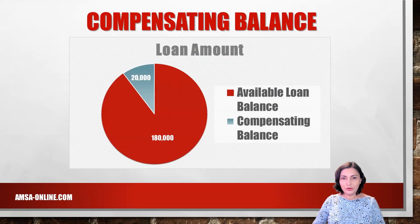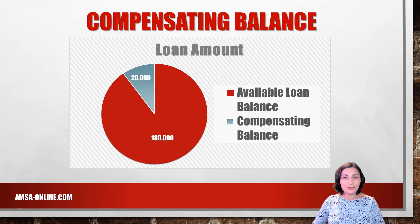The total loan balance is $200,000. However, the available amount for the business to use is only $180,000, which is the total balance of $200,000 less the compensating balance of $20,000.